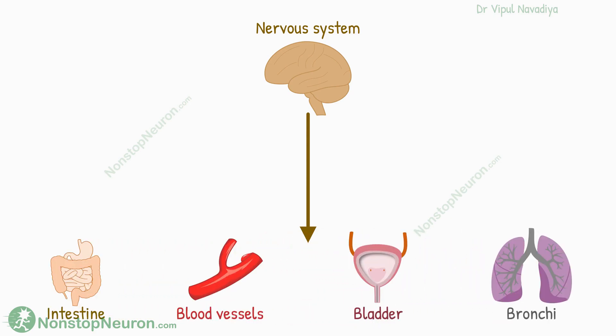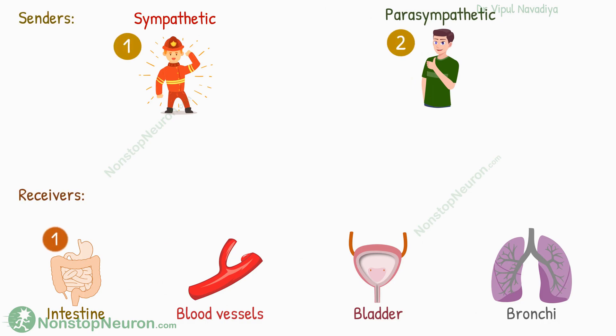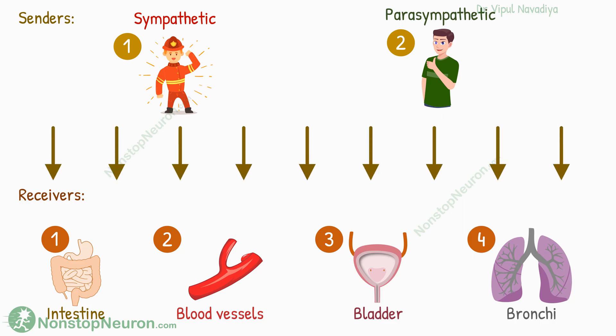Smooth muscles are found in organs that work automatically without our conscious control, like the intestine, urinary bladder, blood vessels, etc. Their activity is controlled by the autonomic nervous system. The autonomic nervous system has two divisions: sympathetic and parasympathetic. So basically, there are two senders and several receivers in our discussion. Now let's understand the pattern behind this communication.